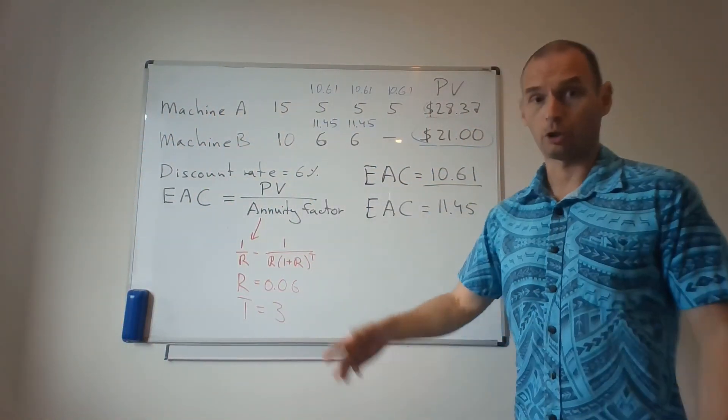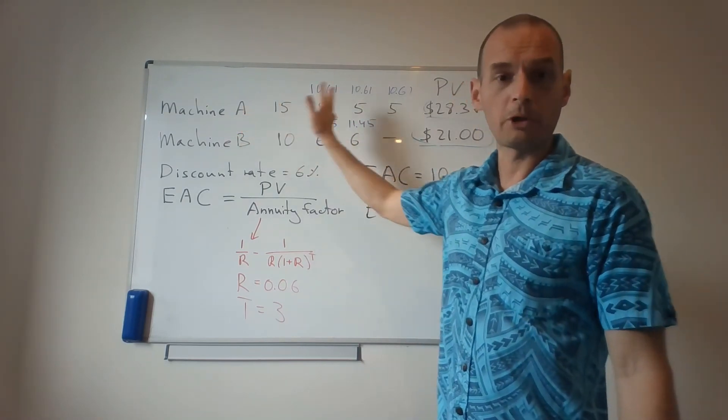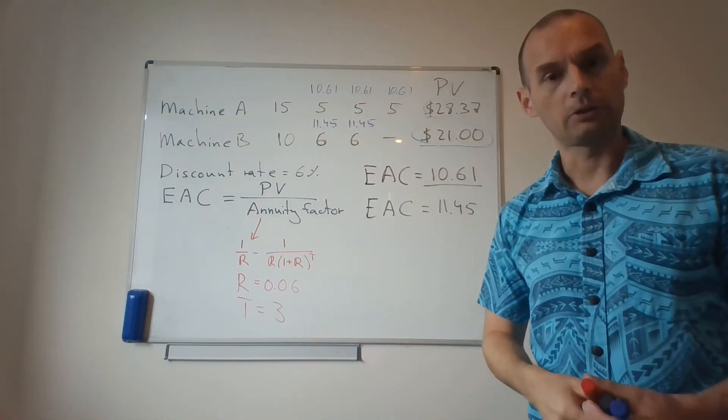Well, the conclusion is simple. You go with Machine A. Equivalent annual cost is lower.